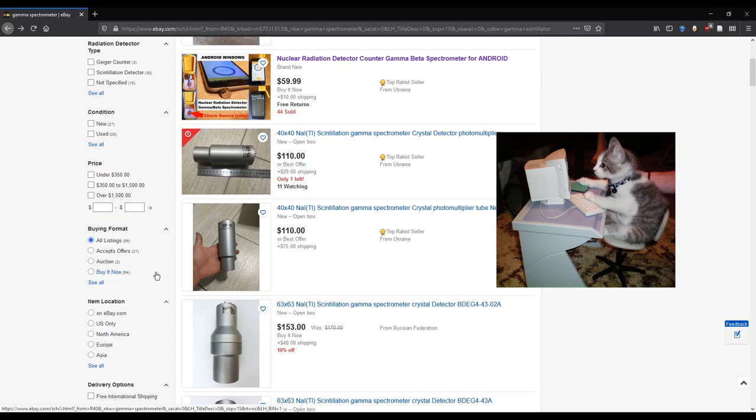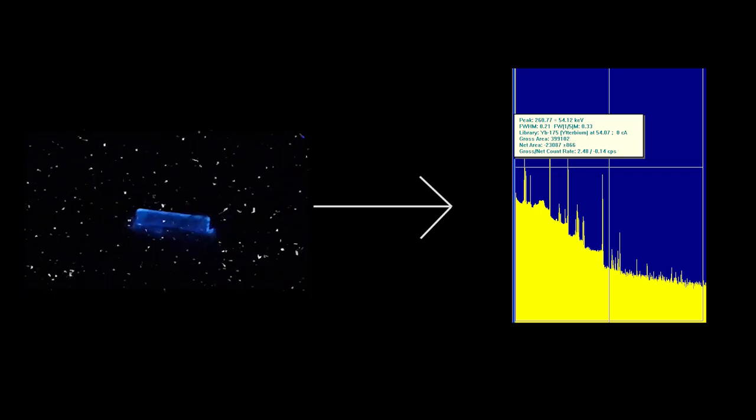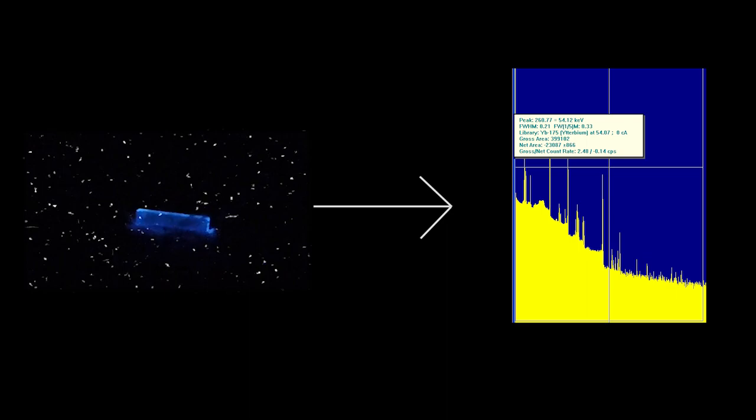You know that Saturday night when you're browsing eBay for gamma spectrometers and you find something? Oh, this looks cool. It's a mobile gamma spectrometer with a scintillator and a photodiode which looks really tiny.